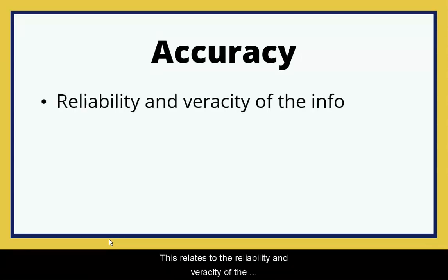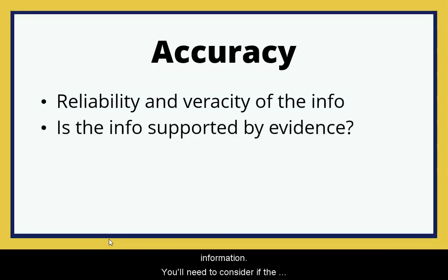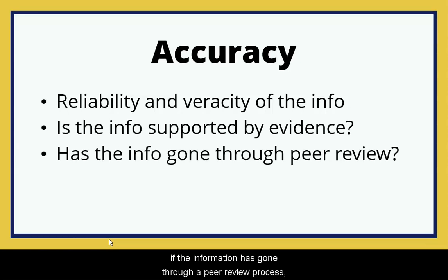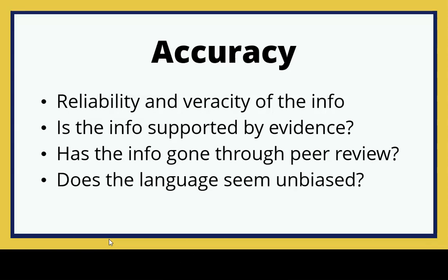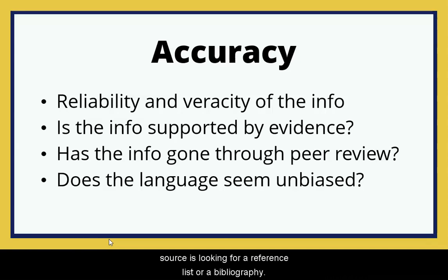Accuracy relates to the reliability and veracity of the information. You'll need to consider if the information was supported by evidence, if the information has gone through a peer review process, and if the language seems unbiased. Something you can do to check for accuracy in a source is looking for a reference list or a bibliography.